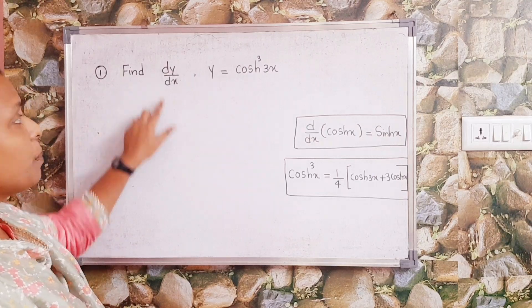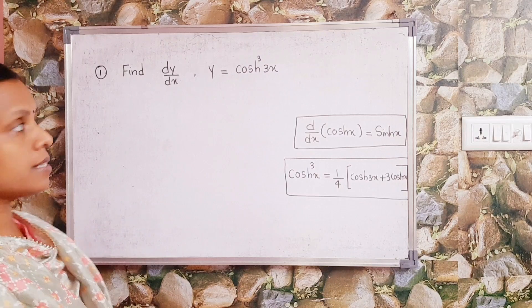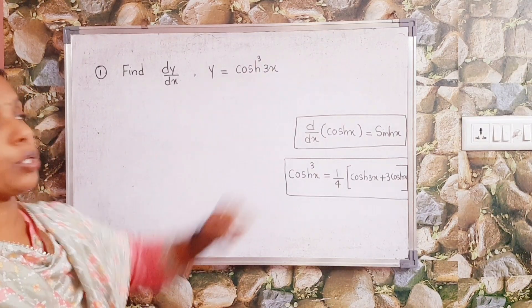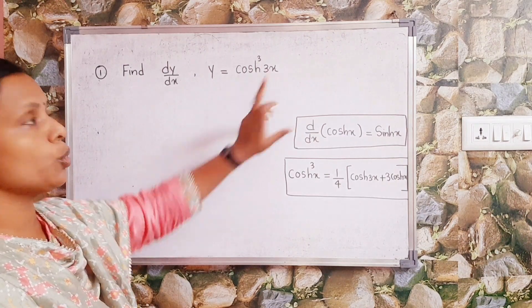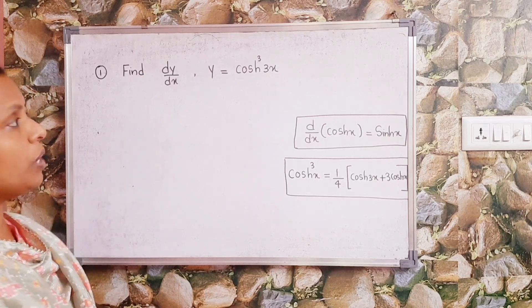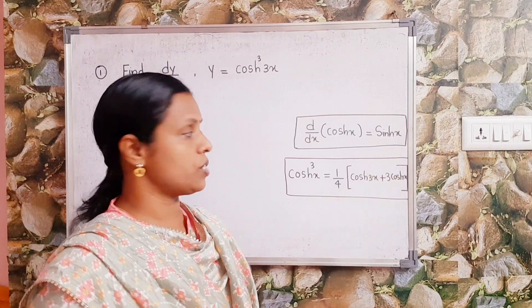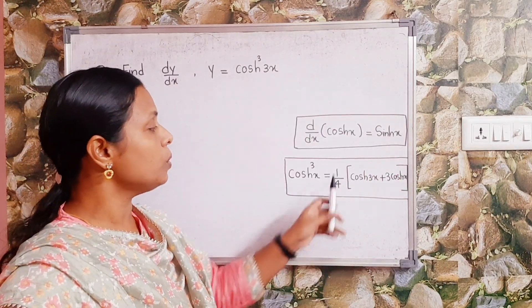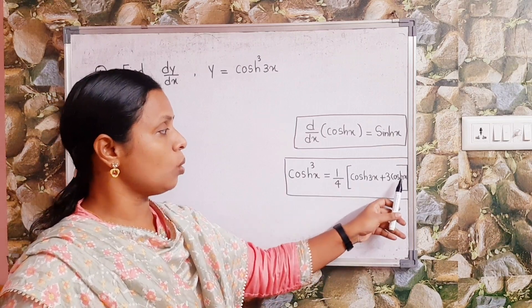First problem: find dy/dx, given y = cosh³(3x). We know that d/dx of cosh(x) is sinh(x), and also we know that cosh³(x) = (1/4)(cosh(3x) + 3cosh(x)).